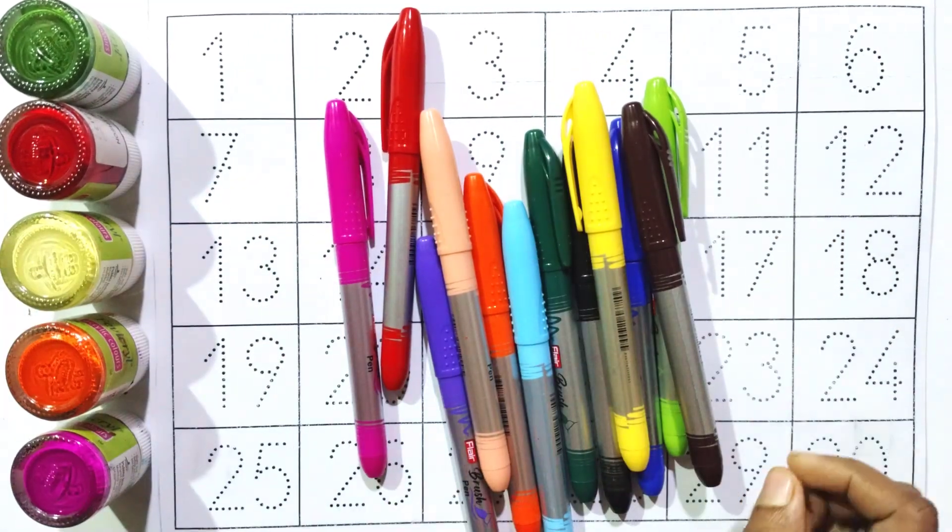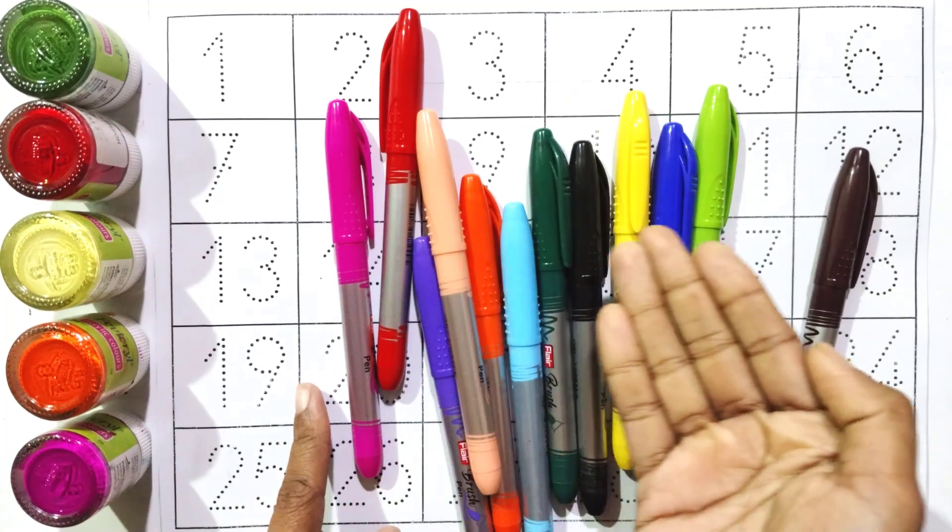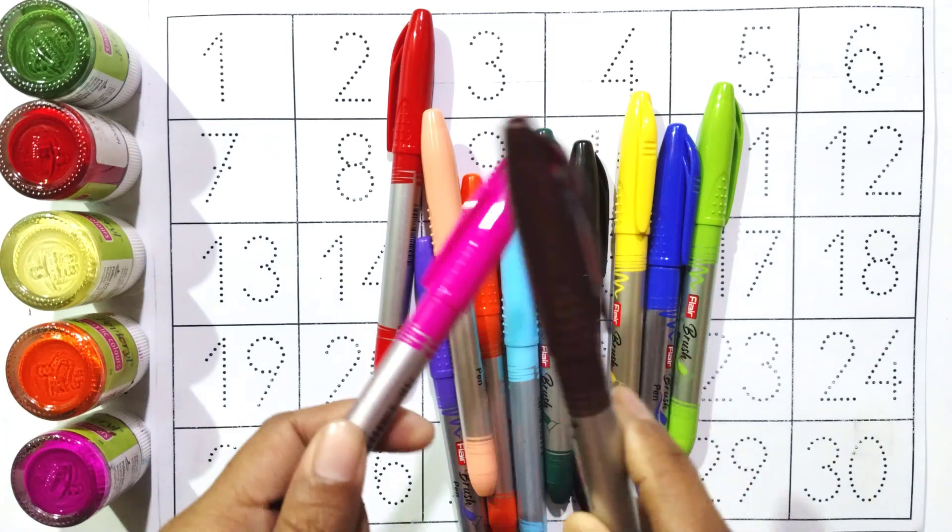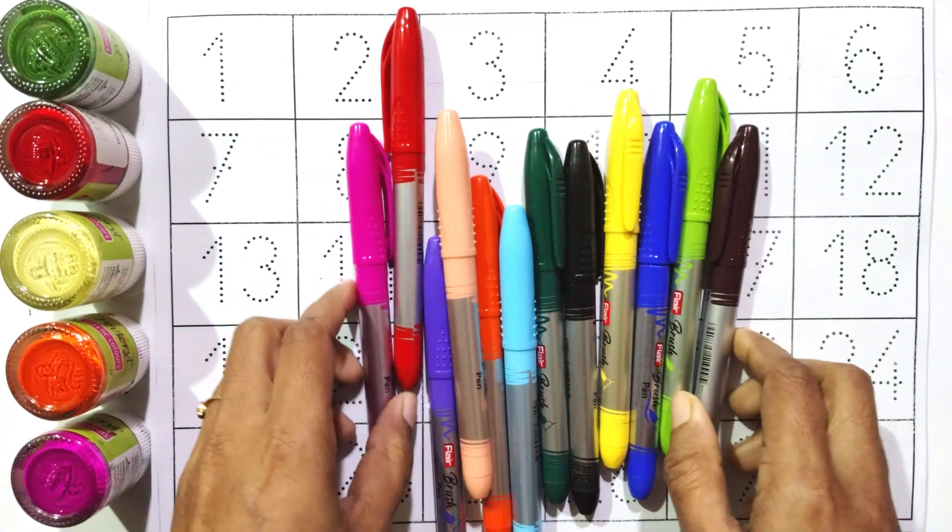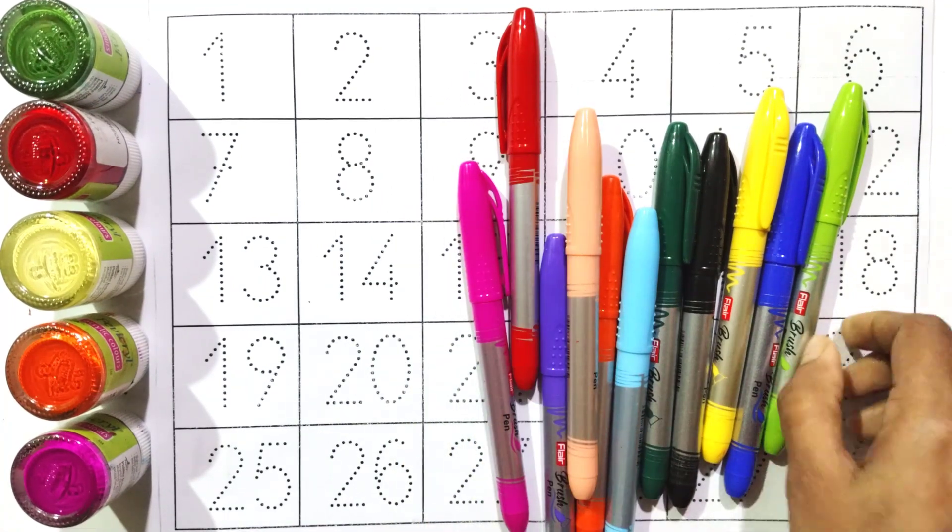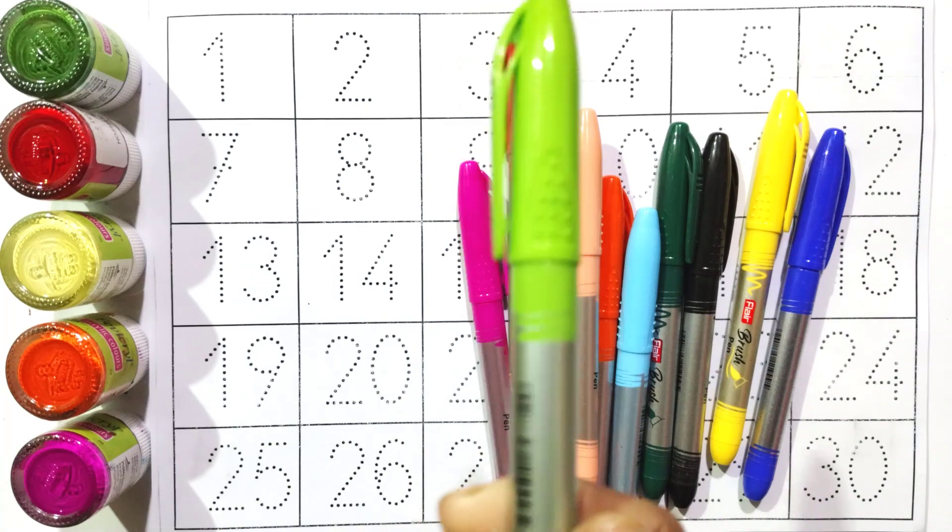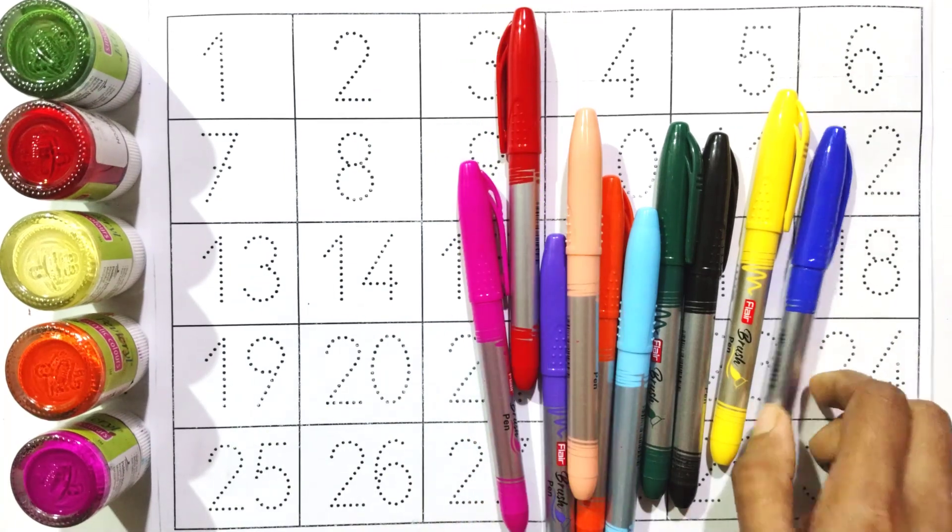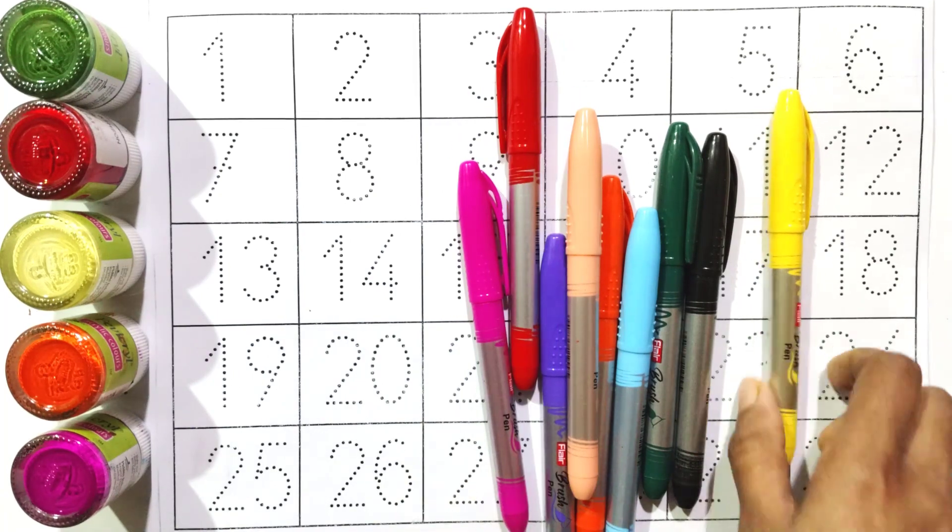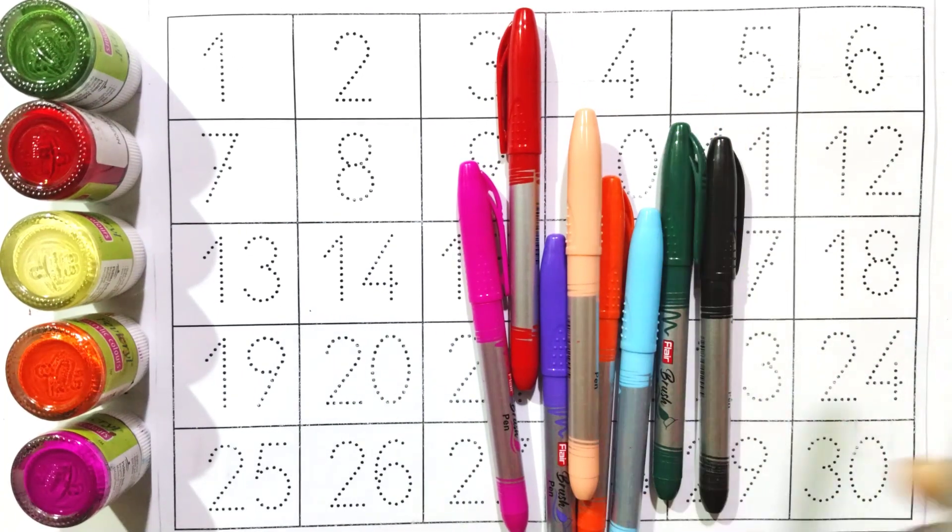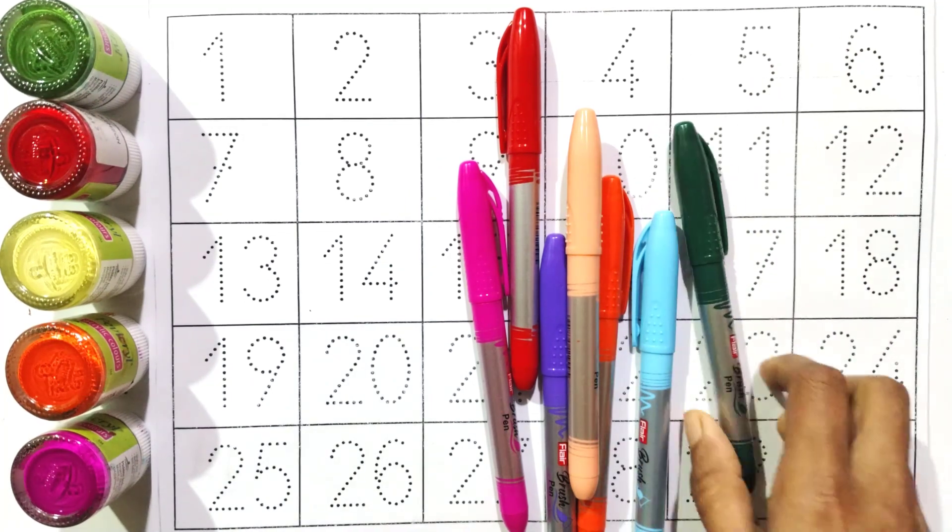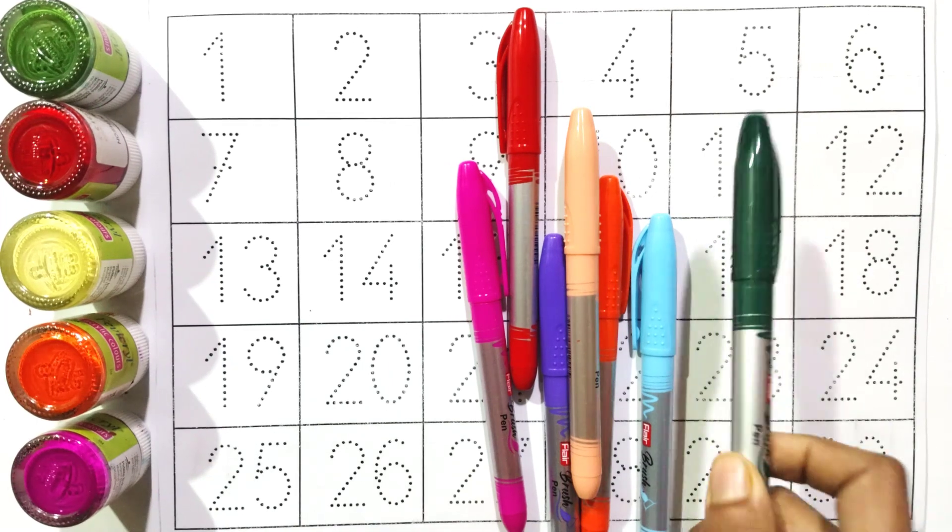Hello kids, today we will learn colors names and count numbers. At first we will learn colors names, stay with me. Colors name: brown, fair, green, blue, yellow, black, green.